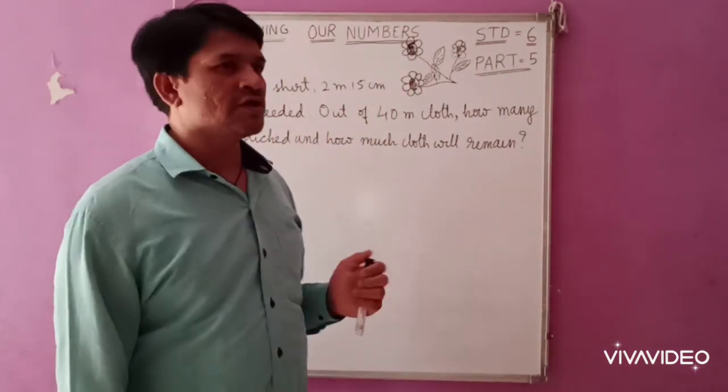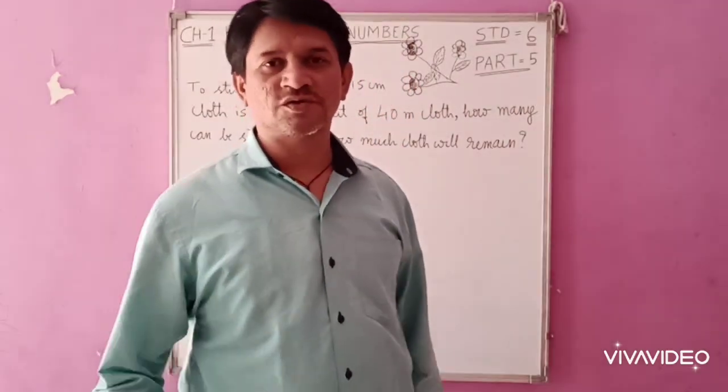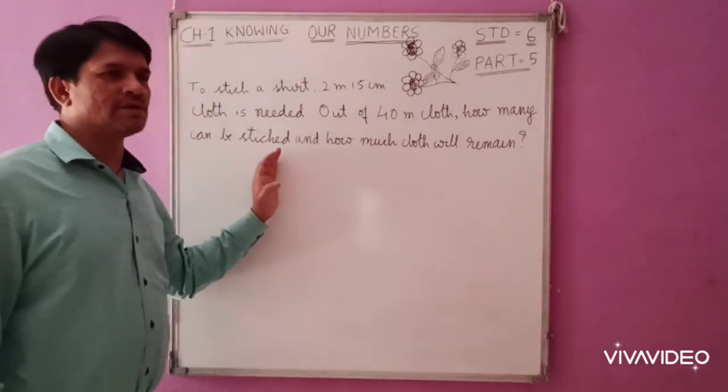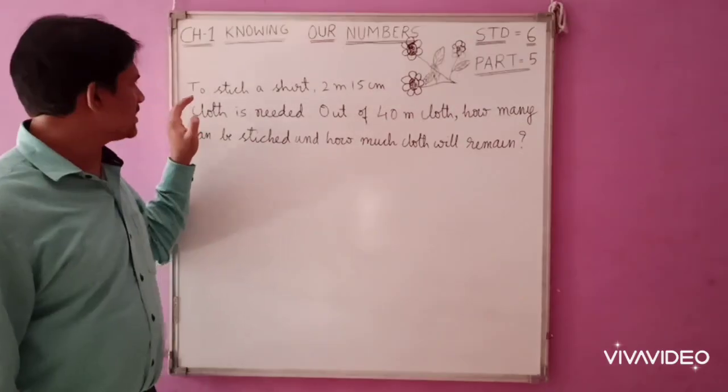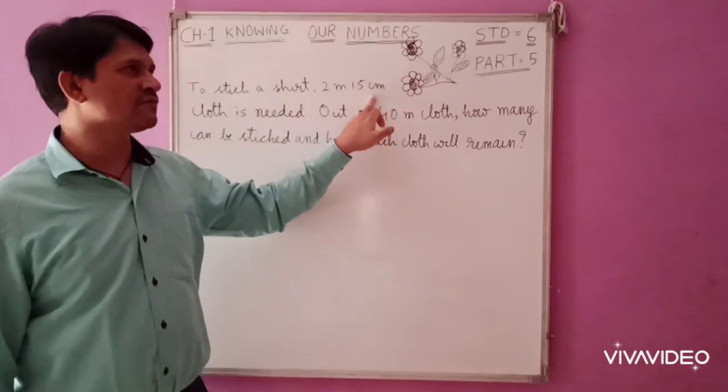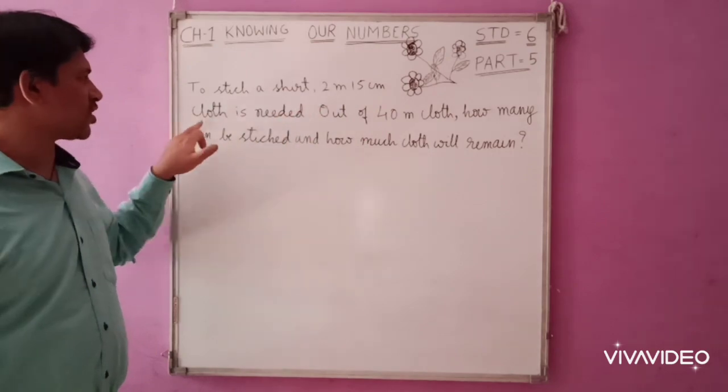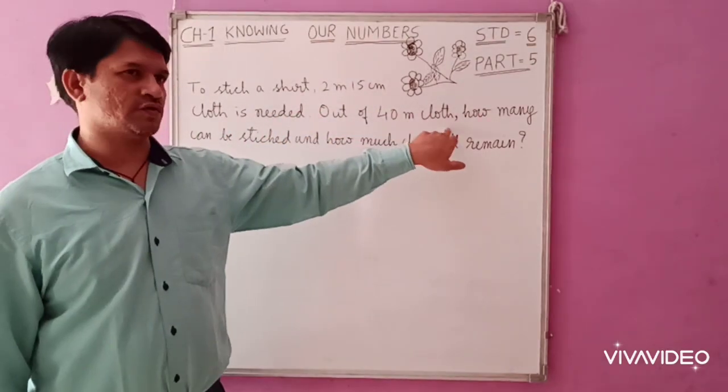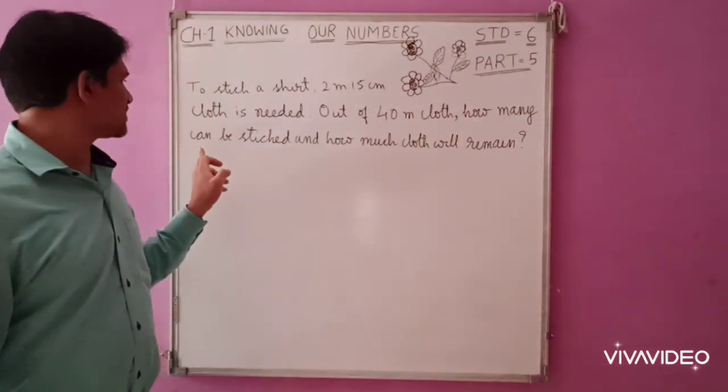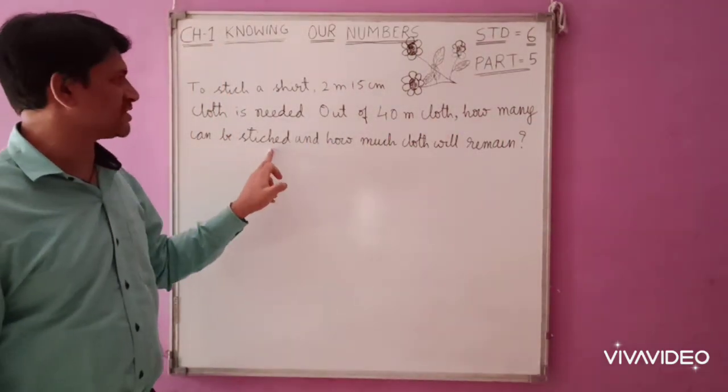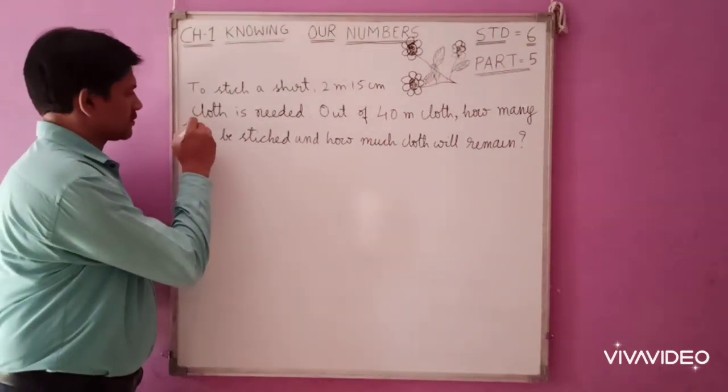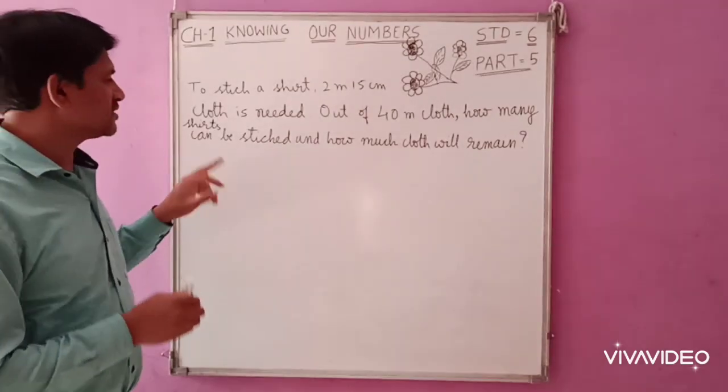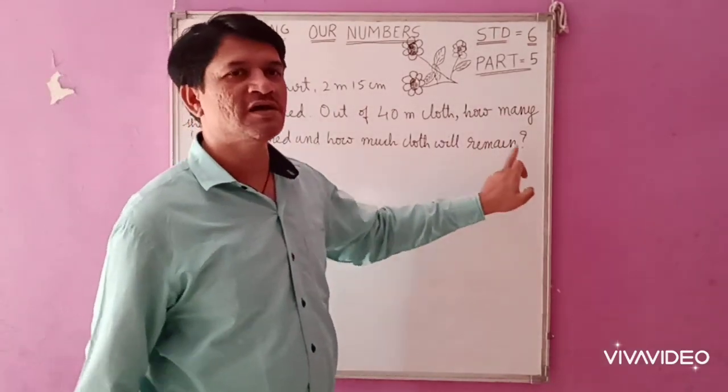Today we are going to discuss problems based on divisions. Here is one problem written on the board. To stitch a shirt, 2 meter 15 centimeter cloth is needed. Out of 40 meter cloth, how many shirts can be stitched and how much cloth will remain?